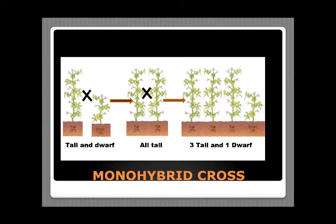He then let these F1 generation plants self-pollinate. He called this the first filial generation or F1 generation. In the next generation — F2 or second filial generation — he observed that three plants were tall and one was dwarf. When he counted all the plants in his experiment, the ratio came out to be 3:1 — three tall and one dwarf.